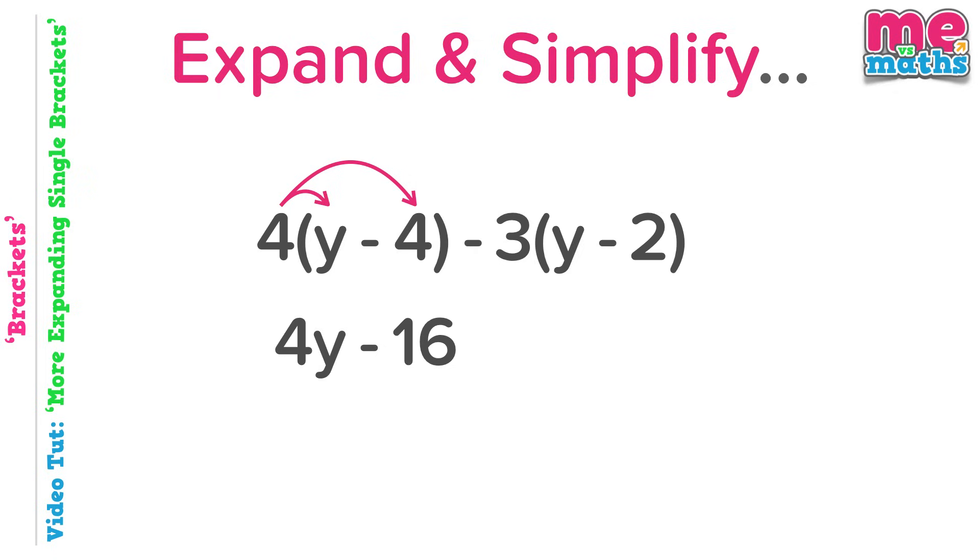The second bracket. I handle these by looking at the number outside and deciding is it positive or negative. The three is negative as it has a minus sign in front of it, so negative three times positive y equals minus 3y. Lastly for our expansion, negative three times negative two will give positive six or plus six.